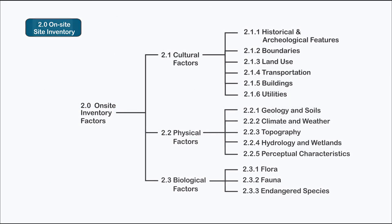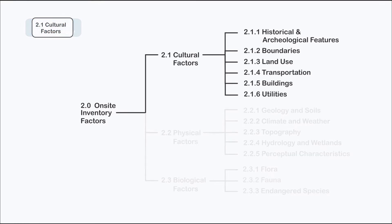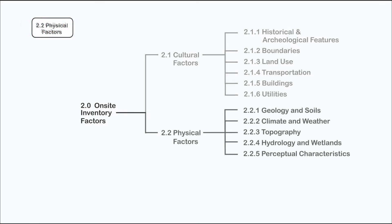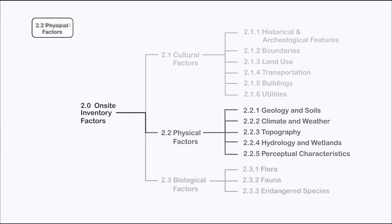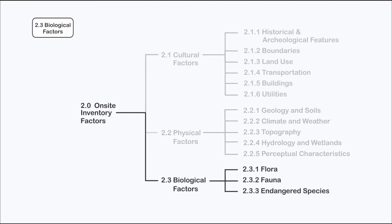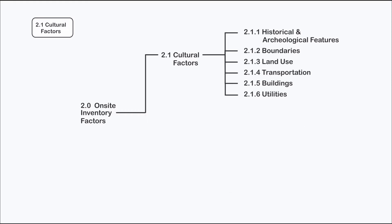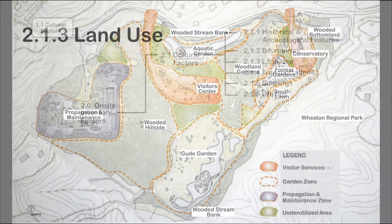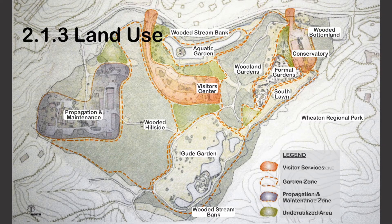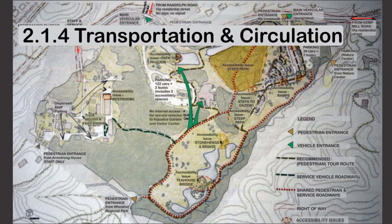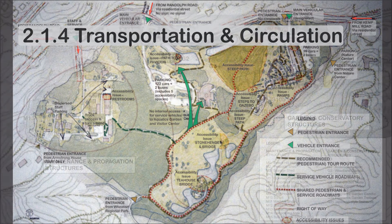First is the on-site inventory. Generally, the on-site inventory is divided into cultural, physical, and biological factors. It is a logical classification. Cultural factors relate to human activities and impacts. It includes assessing buildings, utilities, boundaries, historical and archaeological features, and other factors.